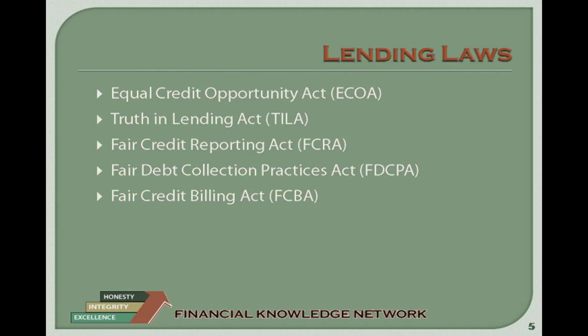A lender may not ask about birth control practices or intentions of having children. However, a lender may ask about the number and ages of your dependents. The lender may not ask about whether you are male or female — courtesy titles such as Mr., Mrs., Ms., or Miss may be requested but are optional. The lender may not ask for your race, color, religion, or national origin. Note that in most cases, lenders cannot request this information.